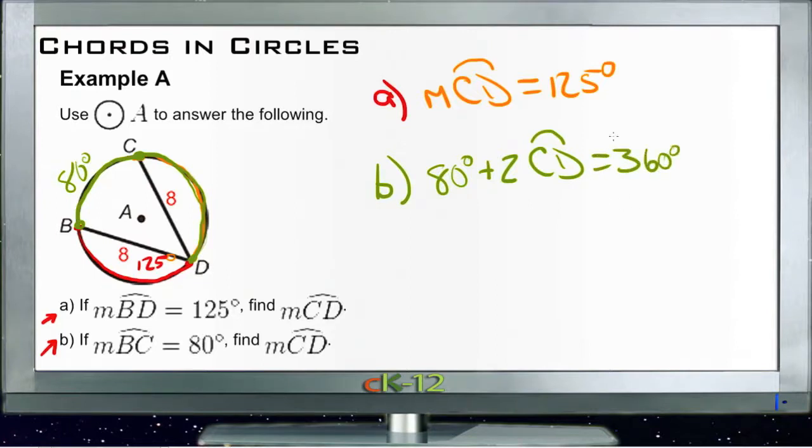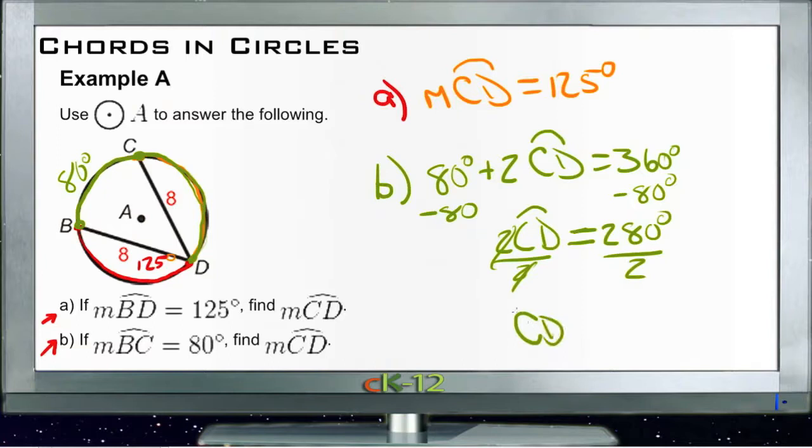Because that's the whole circle. Then we can just subtract the 80 degrees from both sides. 360 minus 80 is 280. And then we know that 2 times CD is equal to 280 degrees. So we divide both sides by 2.